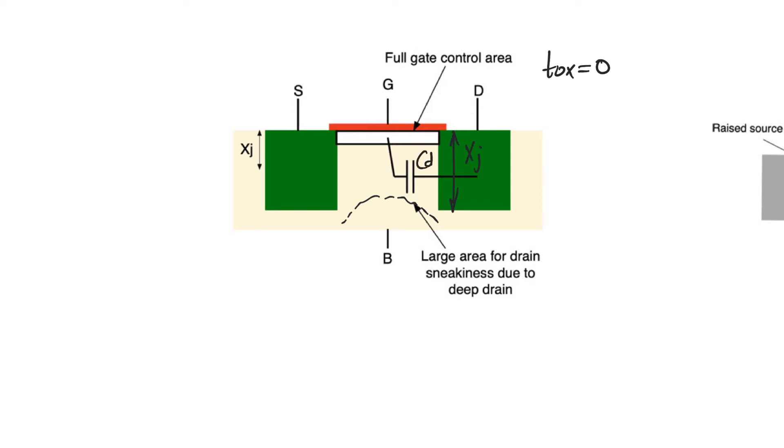So this large face of the drain creates a large area through which a large capacitance can exist and can cause drain induced barrier lowering over the channel. Even if you keep the gate oxide as small as you can, even if you make it zero thickness you're still going to have drain induced barrier lowering.